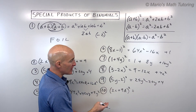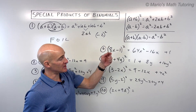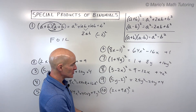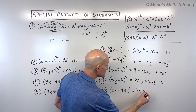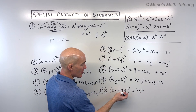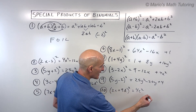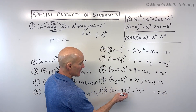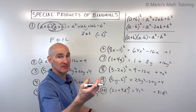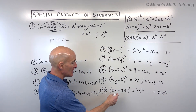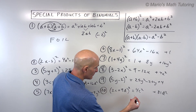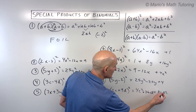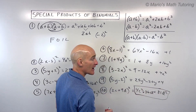For number ten, the last squaring-a-binomial problem: first term squared — 2c times 2c is 4c squared. Last term squared — 9d times 9d is 81d squared. Middle term, a times b times 2: that's 18cd, doubled is 36cd. And that's your final result.